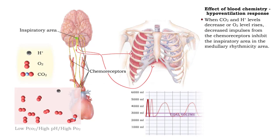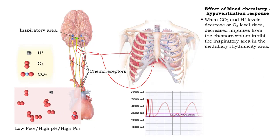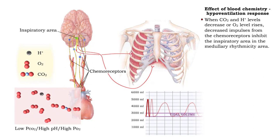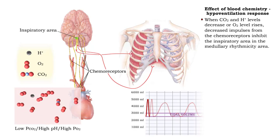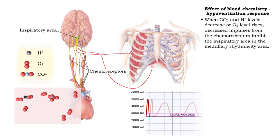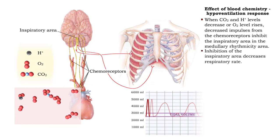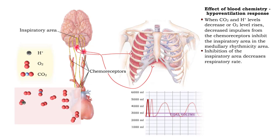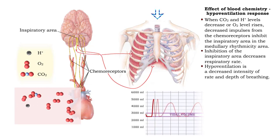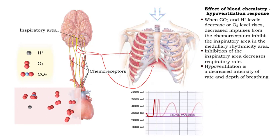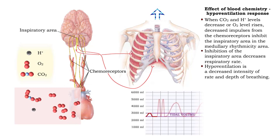When carbon dioxide and hydrogen ion levels decrease, or oxygen level rises, decreased impulses from the chemoreceptors inhibit the inspiratory area in the medullary rhythmicity area. Inhibition of the inspiratory area decreases respiratory rate. A decreased intensity of rate and depth of breathing is known as hypoventilation.